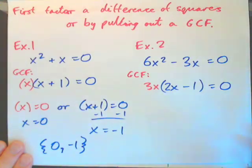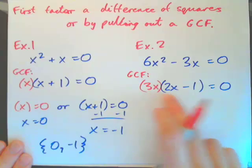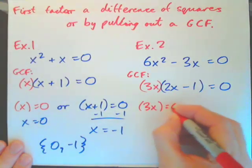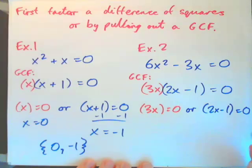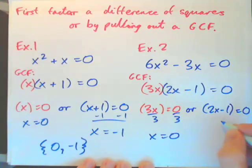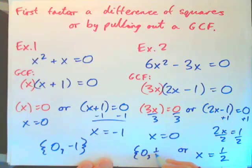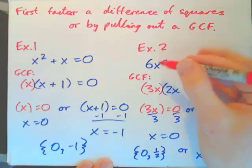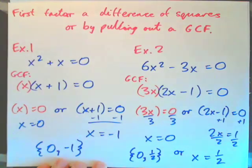So I have 3x times 2x minus 1 equals 0. Using the zero product rule, either 3x equals 0 or 2x minus 1 equals 0. Solving: divide by 3, x is 0. For the second, add 1 to both sides to get 2x equals 1, then divide by 2, so x equals positive 1 half. The solution set is {0, 1/2}. You can plug both in to verify the answers hold true.